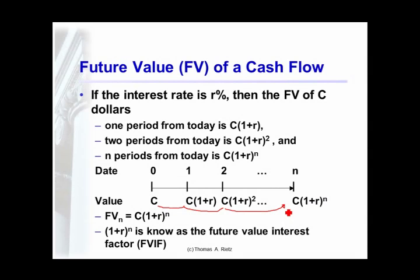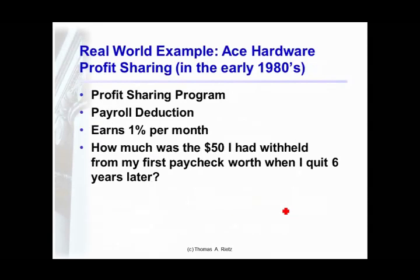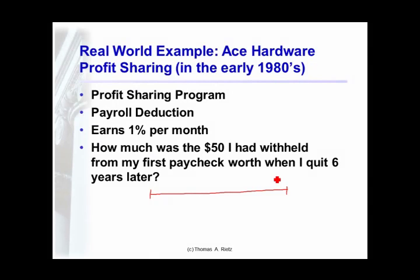To calculate the future value, I would just multiply by 1 plus interest, the number of times that I leave the money in the deposit. So I actually worked at the hardware store for six years. That's 72 months. So my $50 deposit, at the beginning of the time,